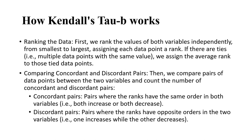How does Kendall's Tau B work? First, we rank the values of both variables independently from smallest to largest, assigning each data point a rank. If there are ties — for example, multiple data points with the same value — we assign the average rank to those tied data points. Then we compare pairs of data points between the two variables and count the number of concordant and discordant pairs. Concordant pairs are where the ranks have the same order in both variables — both increase or both decrease.